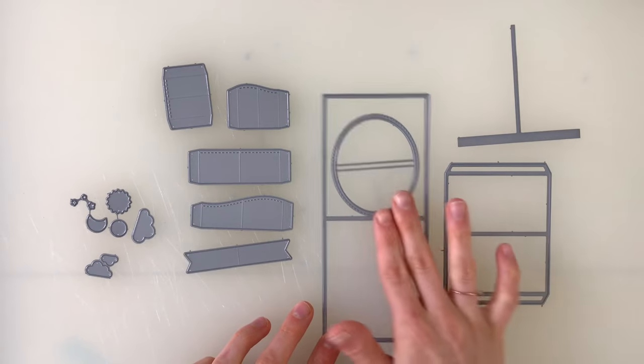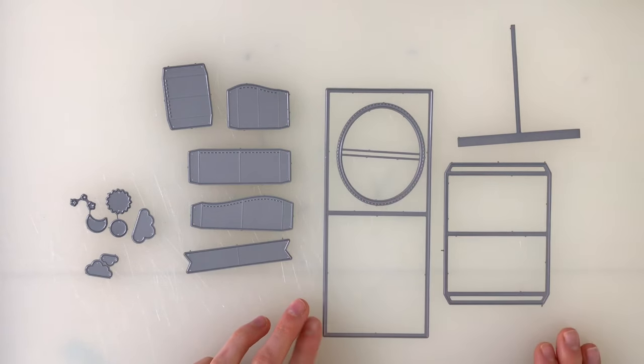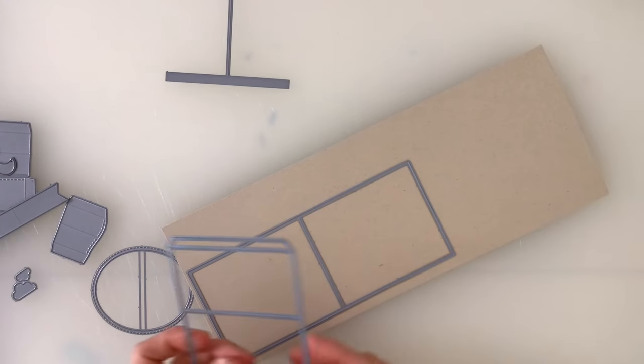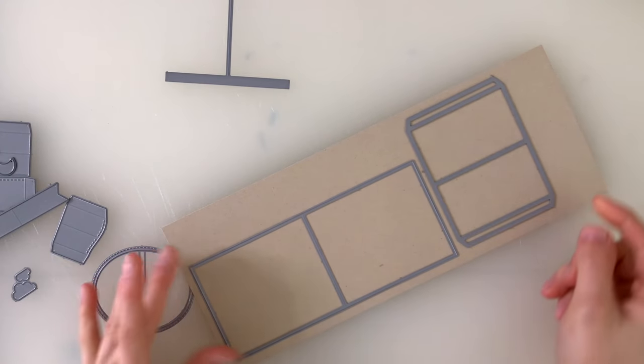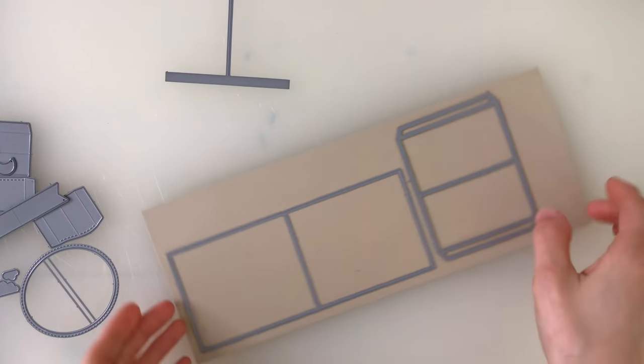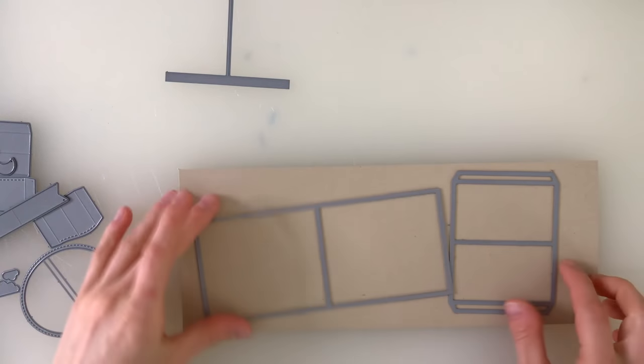I'm going to start by taking the card panel and the tabbed panel. These are the two main elements for creating the center picture window cards. I'll cut these from some brown cardstock.